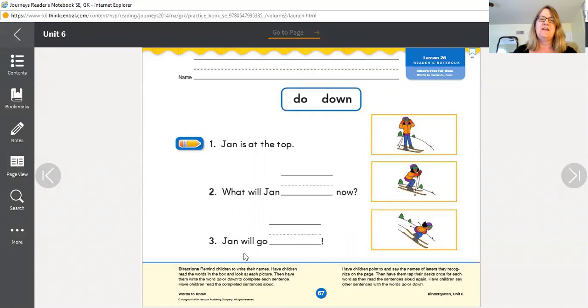Number three, Jan will go blank. What if I tried this one first? Jan will go do? No, that doesn't make sense. Jan will go down. And notice the end mark, the punctuation in this sentence is an exclamation point. So we could say that sentence with excitement.